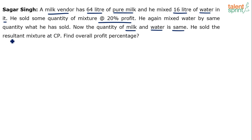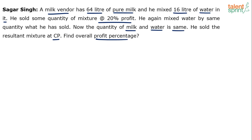He sold the resultant mixture — whatever is the resultant mixture after adding water for the second time — the resultant mixture was sold at cost price. Find the overall profit percentage.